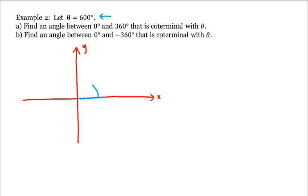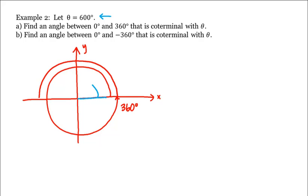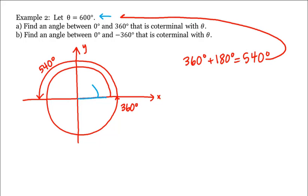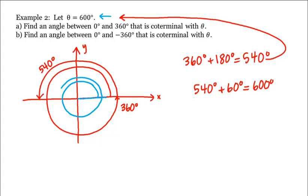But how far do we go? Well, one complete revolution measures 360 degrees. So if we go another 180 degrees, where are we? 360 degrees plus 180 degrees is equal to 540 degrees. We want to get to 600 degrees, which means we're 60 short, because 540 plus 60 is 600. Which means we'll need to go another 60 degrees in the counter-clockwise direction. Namely, we go one full revolution, then another half, then 60 more. So this would be 600 degrees.